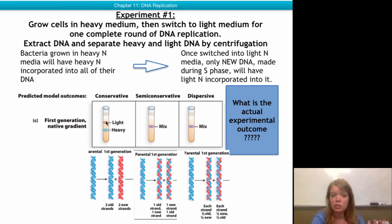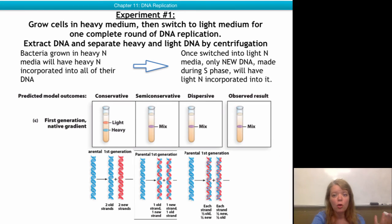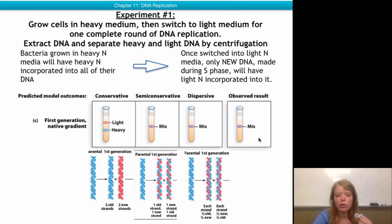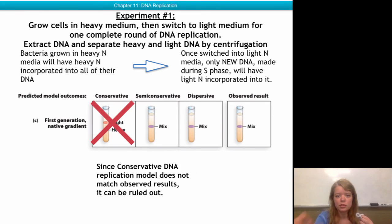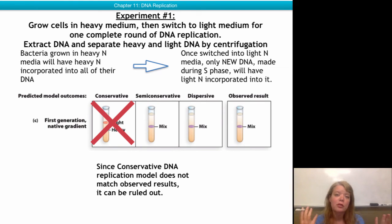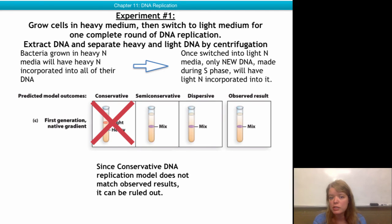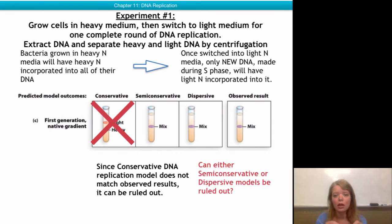So what did Meselson and Stahl observe? When they looked at their results, they got a mixed population, which ruled out the conservative model, since what the conservative model was predicting did not match the results. But which of the other two models — semi-conservative or dispersive — was it?